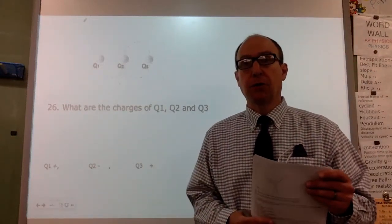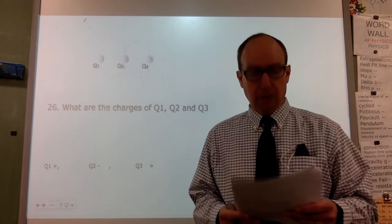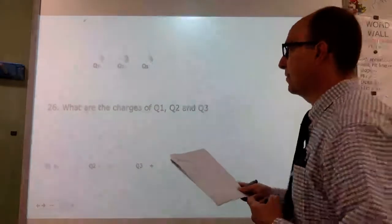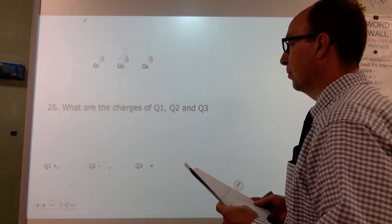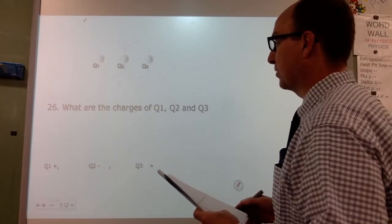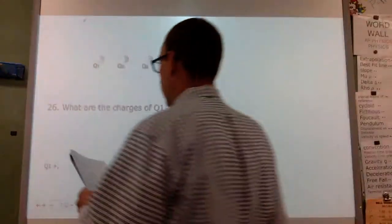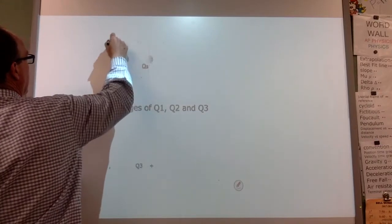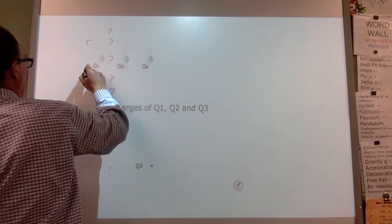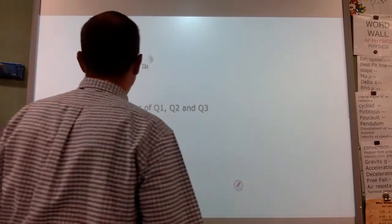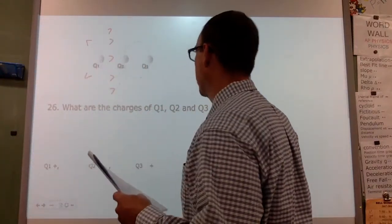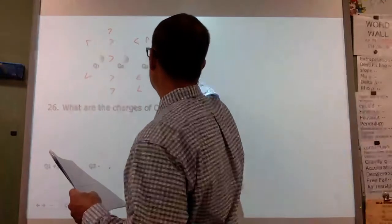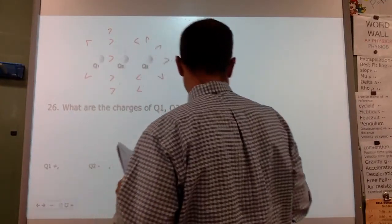Hey guys, welcome back. It's going to be part two of the study guide for the final. Unfortunately it's hard to see a lot of these things, so you'll have to follow along with how the arrows look and then you can answer the questions. For Q1 it should have lines that go away from it, Q2 has lines that go towards it, and Q3 has lines that go away.